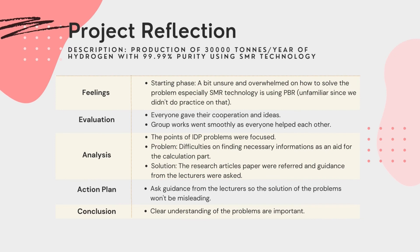This project aims to produce 30,000 tons of hydrogen per year with 99.9% of purity. When we first received the project, we conducted a meeting to discuss what the question asked and distribute the task among the group members. We were a bit unsure on how to solve the problem since SMR's technology is using packed bed reactor, which is not really discussed in class. We also faced some difficulties when we could not find necessary information from the references to help us with the calculation. However, we managed to overcome it by discussing among the team members and referring back to the recorded video lectures. The teamwork was very good and everyone is helping each other. We shared our ideas and suggested other ways to look for the solution. We believe that a good teamwork and communication is very important in completing the task given. We also asked guidance from lecturers so that the solution of the problem would not be misleading. Overall, this project is a success because everyone is giving their cooperation, hence we are able to complete it within the time given. Having a clear understanding of the problem would be helpful for future improvement.